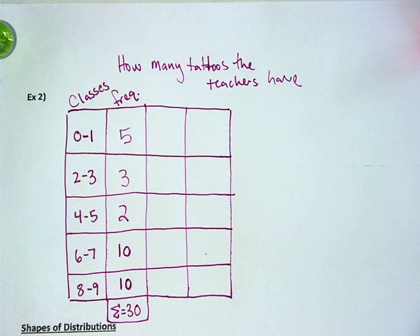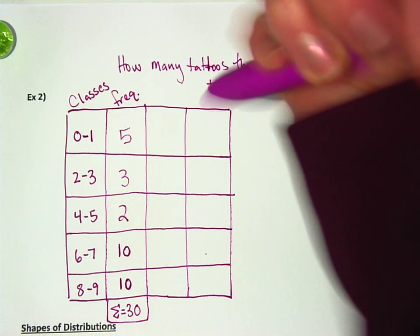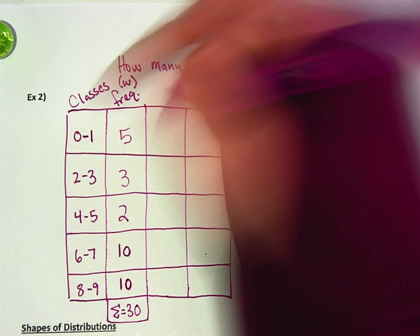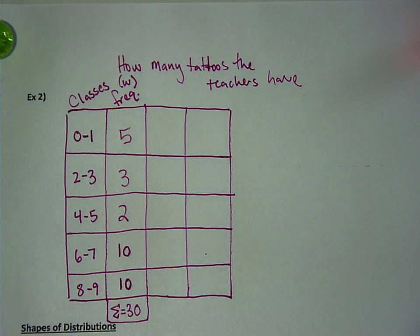Now, on the last thing on a weighted mean, we multiplied a data point times the weight. Now, the frequency is essentially the weight. And the classes are the data point, but we need one data point, not a class.